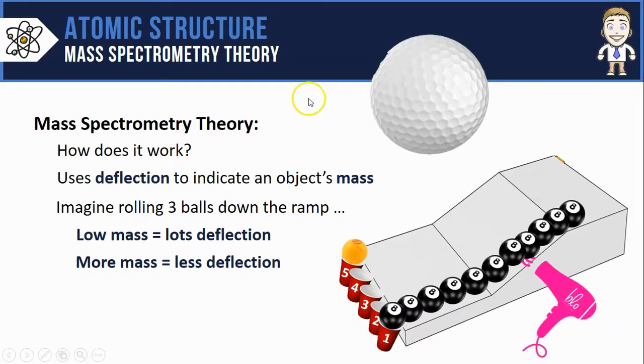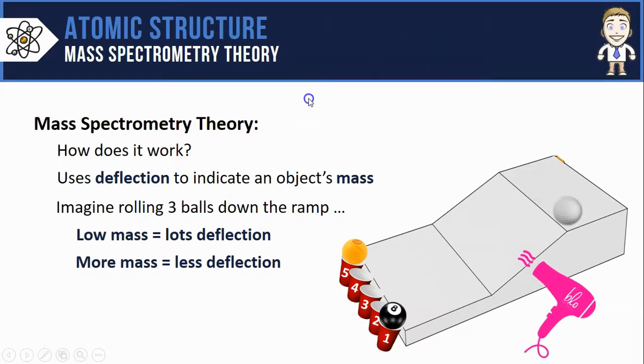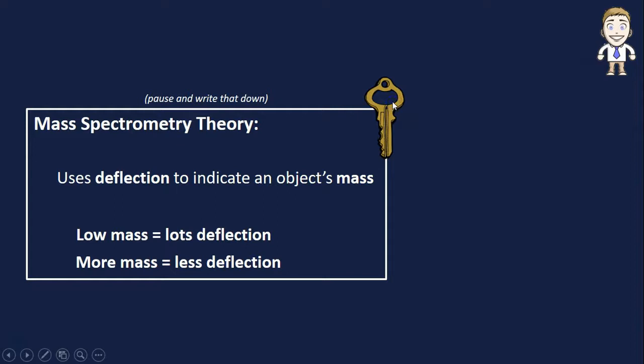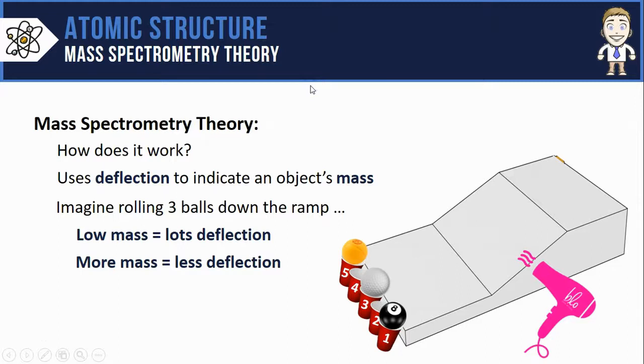Of course, if we did the same thing with the golf ball, it's going to be somewhere in between, maybe exiting in cup three. So this is the simple principle that mass spectrometry uses. A light object gets deflected a lot, a heavy object gets deflected a little.